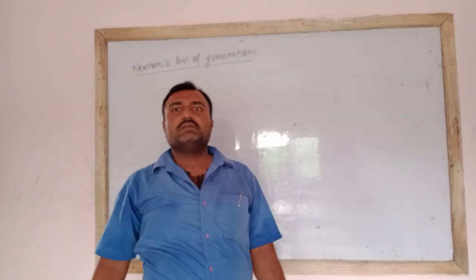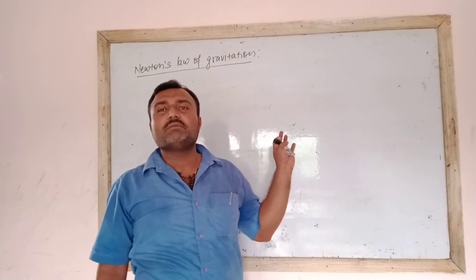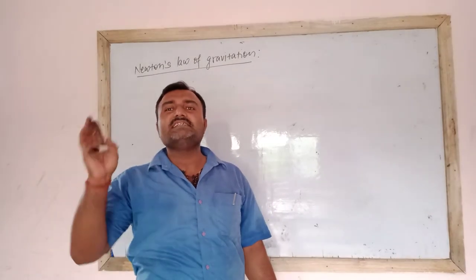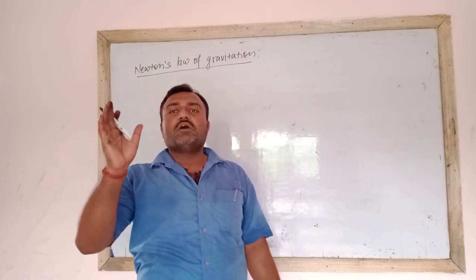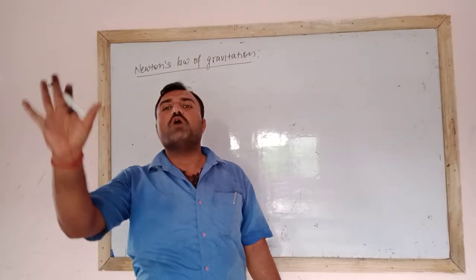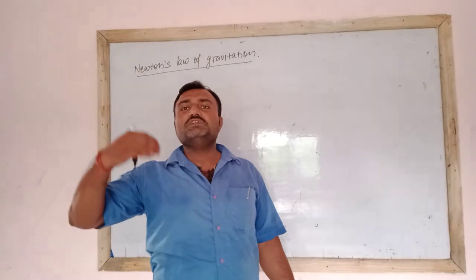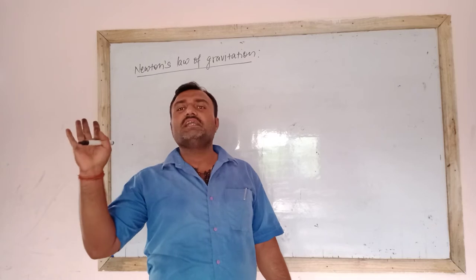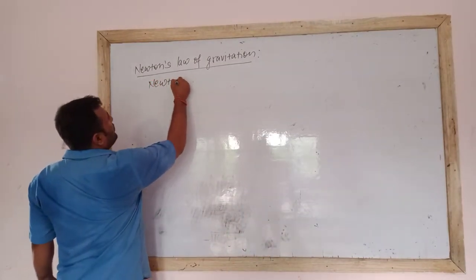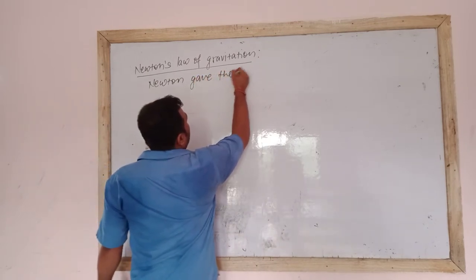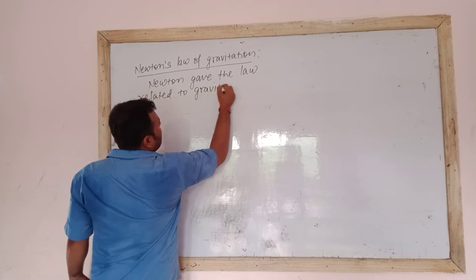In my previous video I discussed about what Gravitation is. Here in this video we discuss that Gravitation was discovered by Sir Isaac Newton. He gave the law to find out how much gravitational force of attraction exists between any two objects. That law is known as Newton's Law of Gravitation, also called the Universal Law of Gravitation, because it applies everywhere in this universe for all kinds of objects.